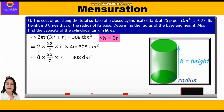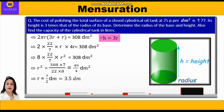Cross-multiplying to find r²: r² = (308 × 7) / (22 × 8) = 49/4 dm². So r = √(49/4) = 7/2 dm = 3.5 dm.